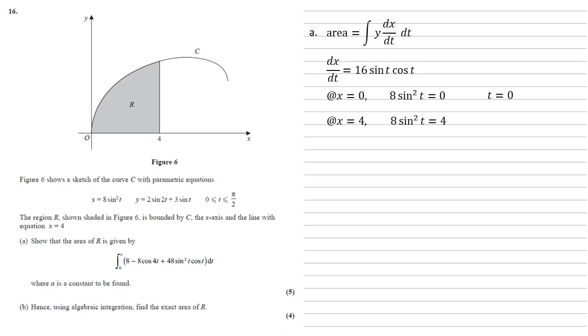When x equals 4, we have 8 sine squared t equals 4. Dividing both sides by 8, sine squared t equals a half, so sine t equals 1 over root 2. Taking the positive square root and applying inverse sine gives t equals pi over 4. So the bounds are 0 and pi over 4.